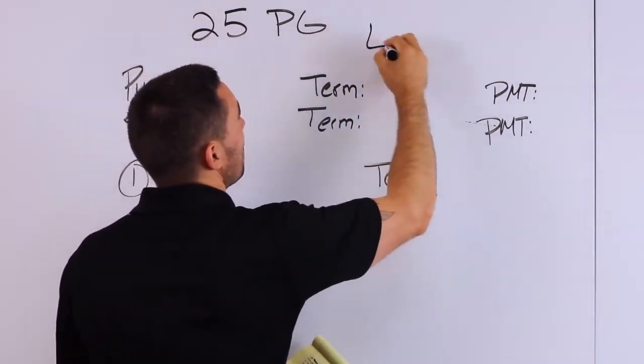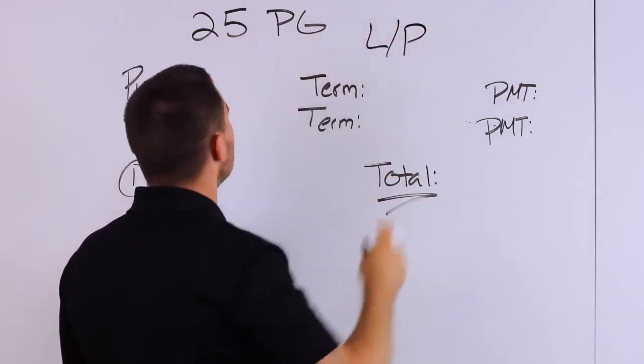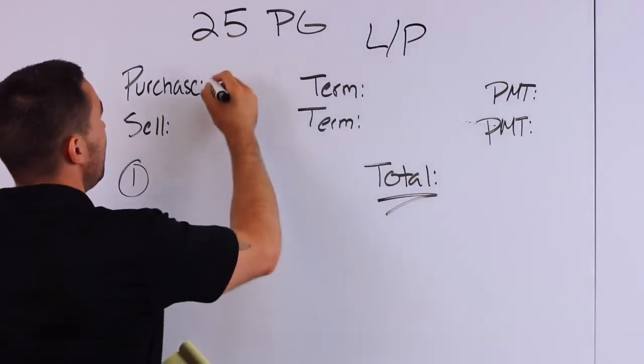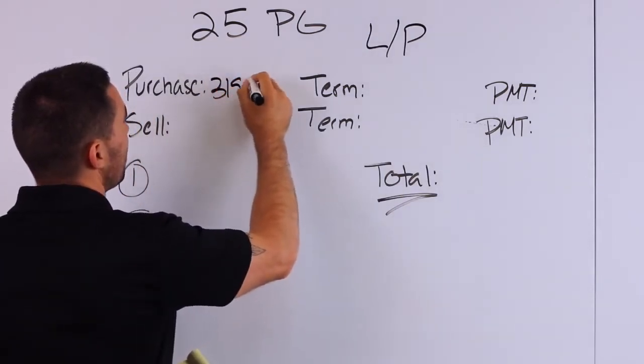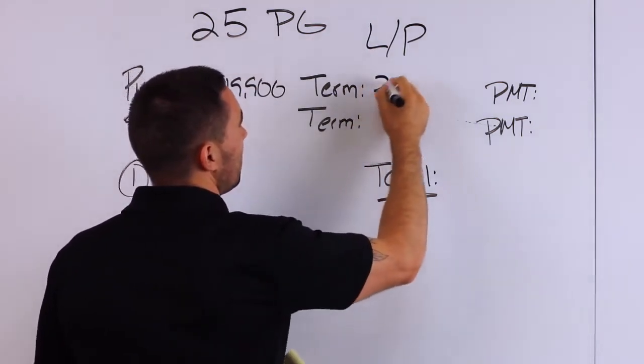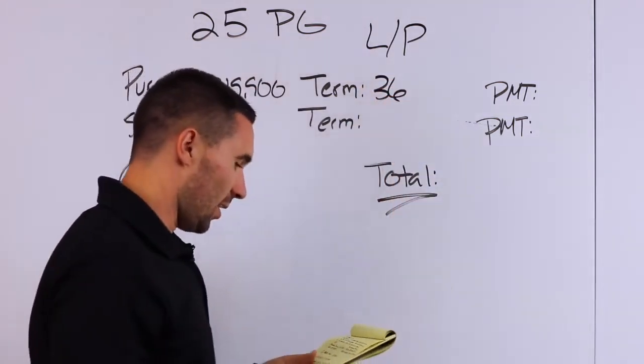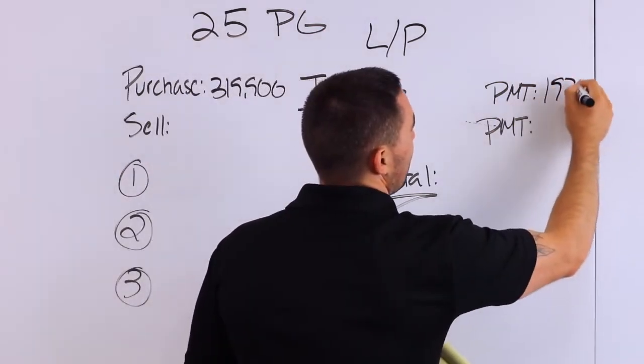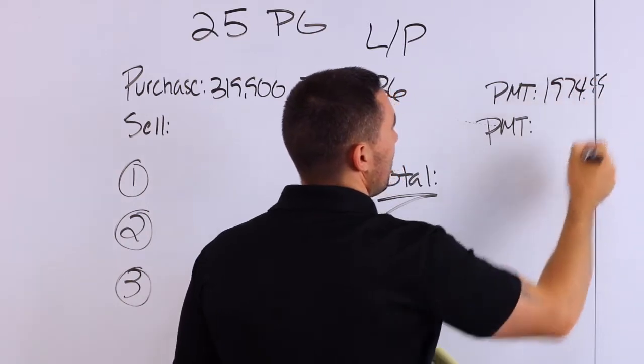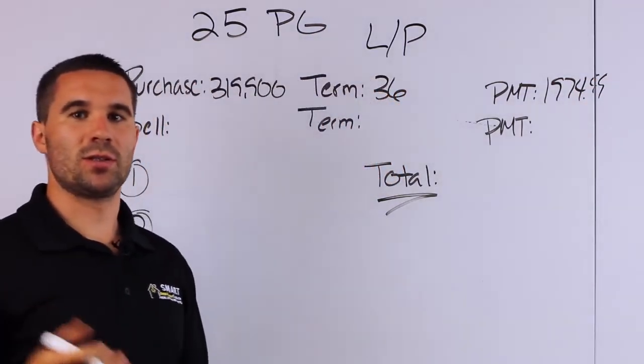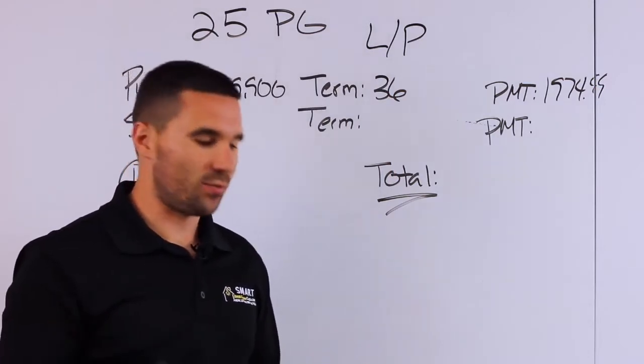So we purchased it on a lease purchase agreement. Purchase price $319,900. So I bought that from the seller for $319,900 on a term of 36 months, and the monthly payment is $1,974.99. That is principal, interest, taxes, and insurance. It happens to be in an area where the taxes are pretty high.